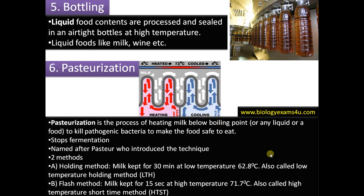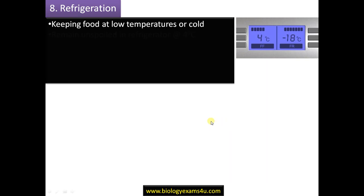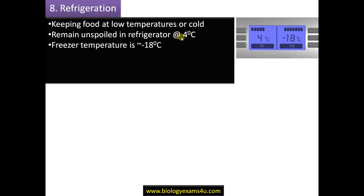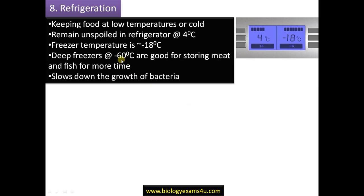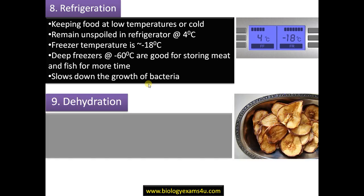Refrigeration is one of the most common methods of food preservation. Food is kept at low temperatures in refrigerators. The typical refrigerator temperature is 4°C, the freezer is approximately −18°C, and deep freezers are at −60°C, which is good for storing meat and fish for longer periods. Refrigeration does not kill microorganisms completely — it slows down their growth.